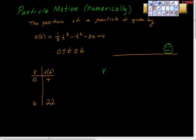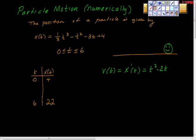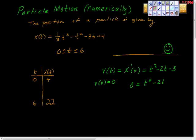We know that the velocity at any given time is equal to the first derivative of the position function. Taking the derivative: the derivative of (1/3)t³ is t², derivative of -t² is -2t, derivative of -3t is -3, and derivative of 4 is 0. So v(t) = t² - 2t - 3. We want to know: does the velocity ever equal 0? So set t² - 2t - 3 = 0.